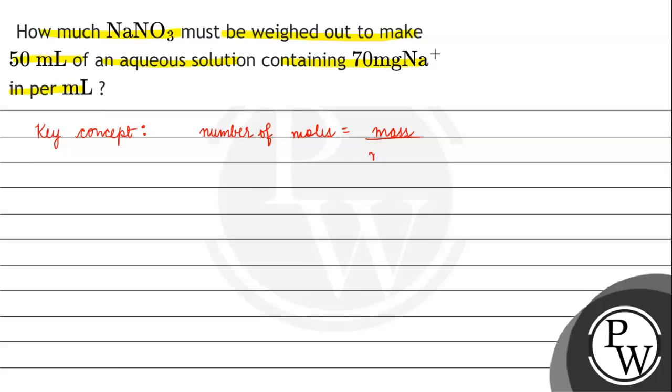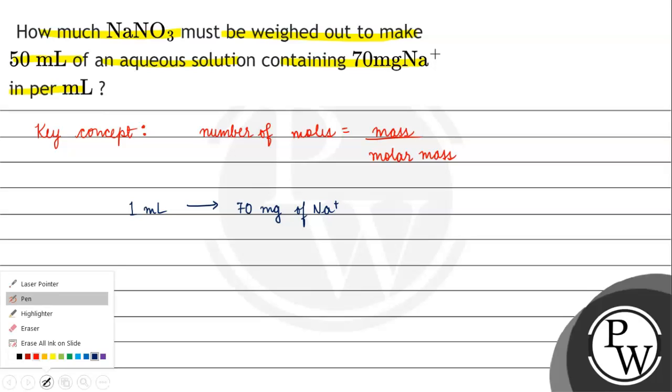Now my question says that we have to make a solution with volume 50 mL and in it per mL we have 70 mg of sodium ion present. So per mL, in one mL, we need 70 mg of Na+. If we have to prepare total 50 mL, then in 50 mL we will have 70 times 50 mg of Na+.